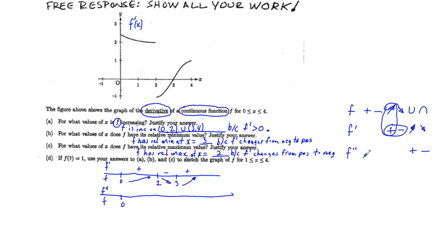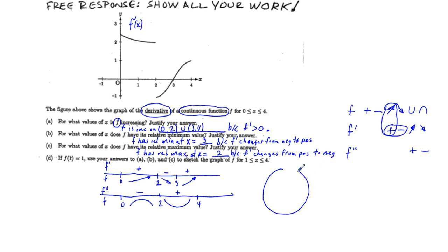For the f double prime, we look at our chart again: if f prime is increasing, we have concave up; if f prime is decreasing, we have concave down, meaning f double prime is negative. So between 0 and 2, f prime is decreasing, so f double prime is negative and f is concave down over this interval. Between 2 and 4, f prime is increasing, meaning f double prime is positive and function f is concave up.